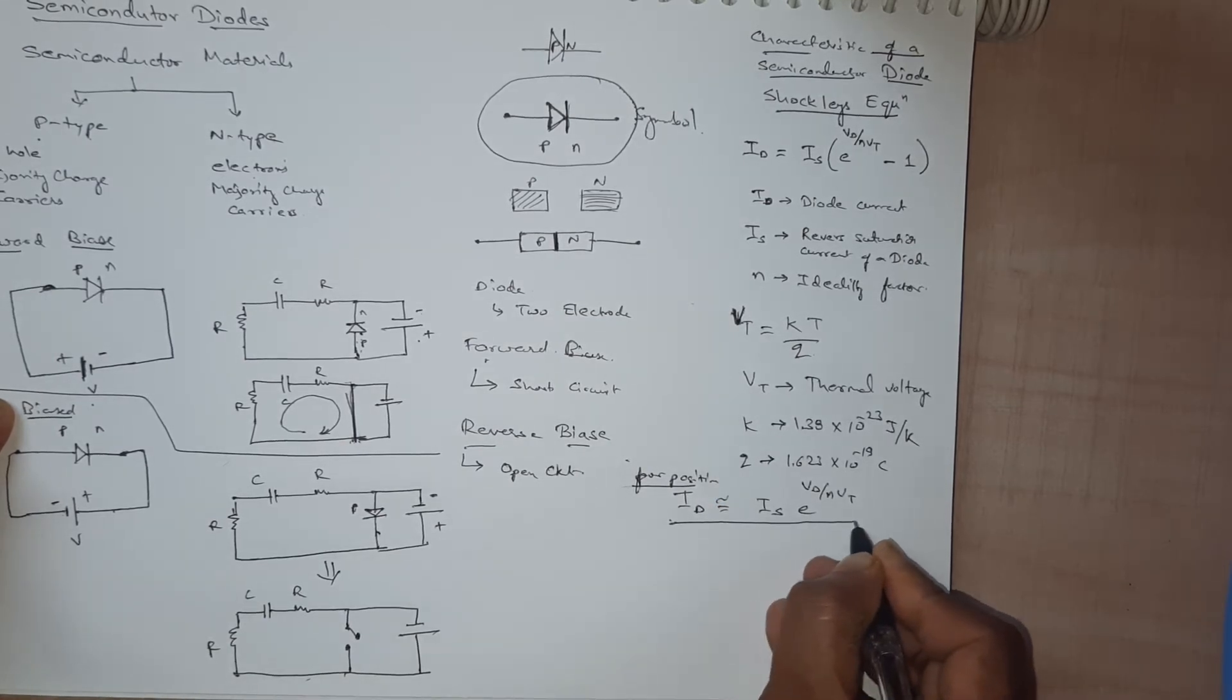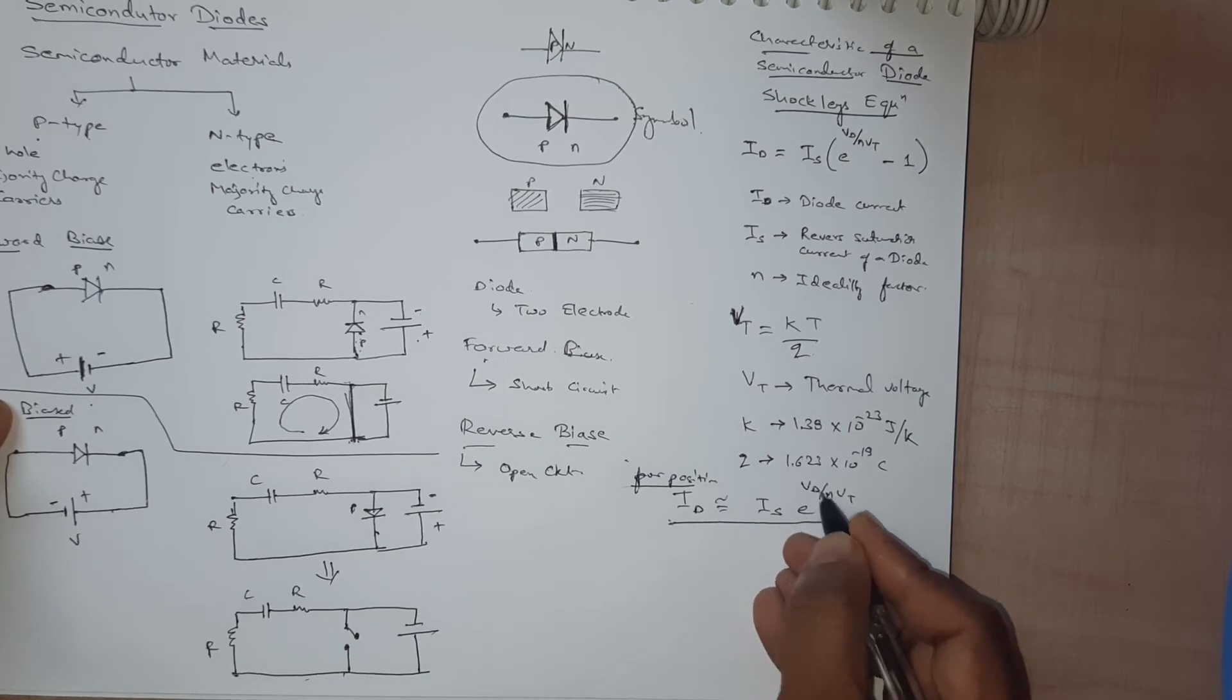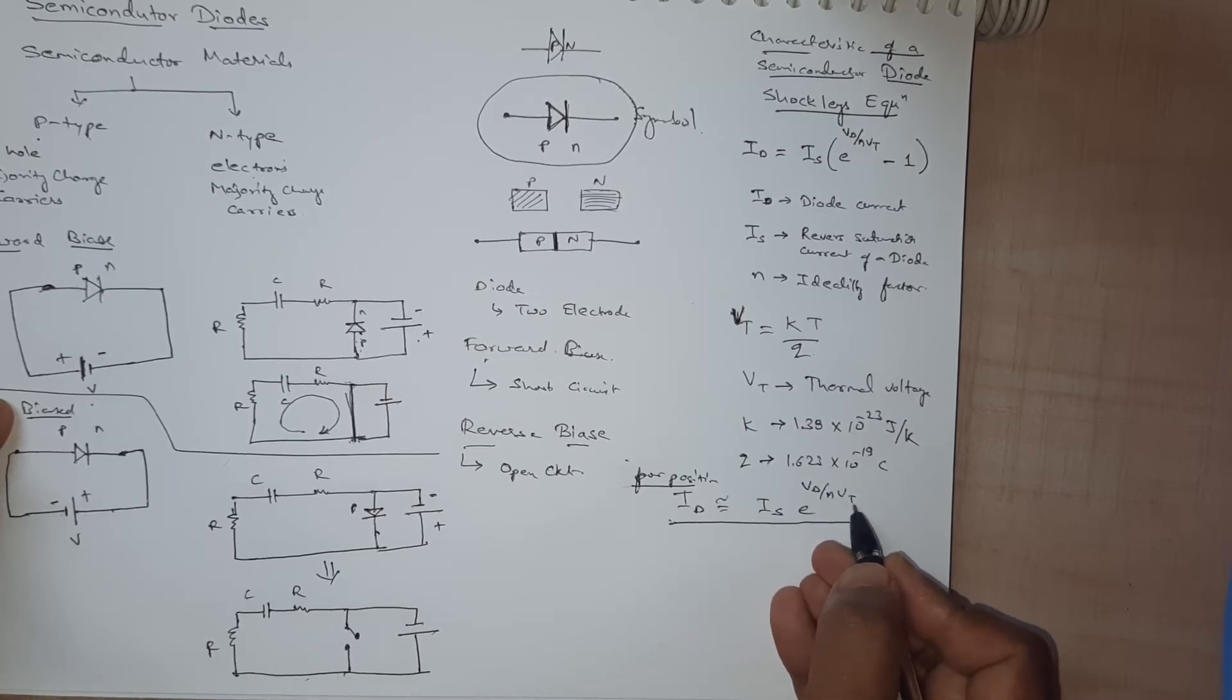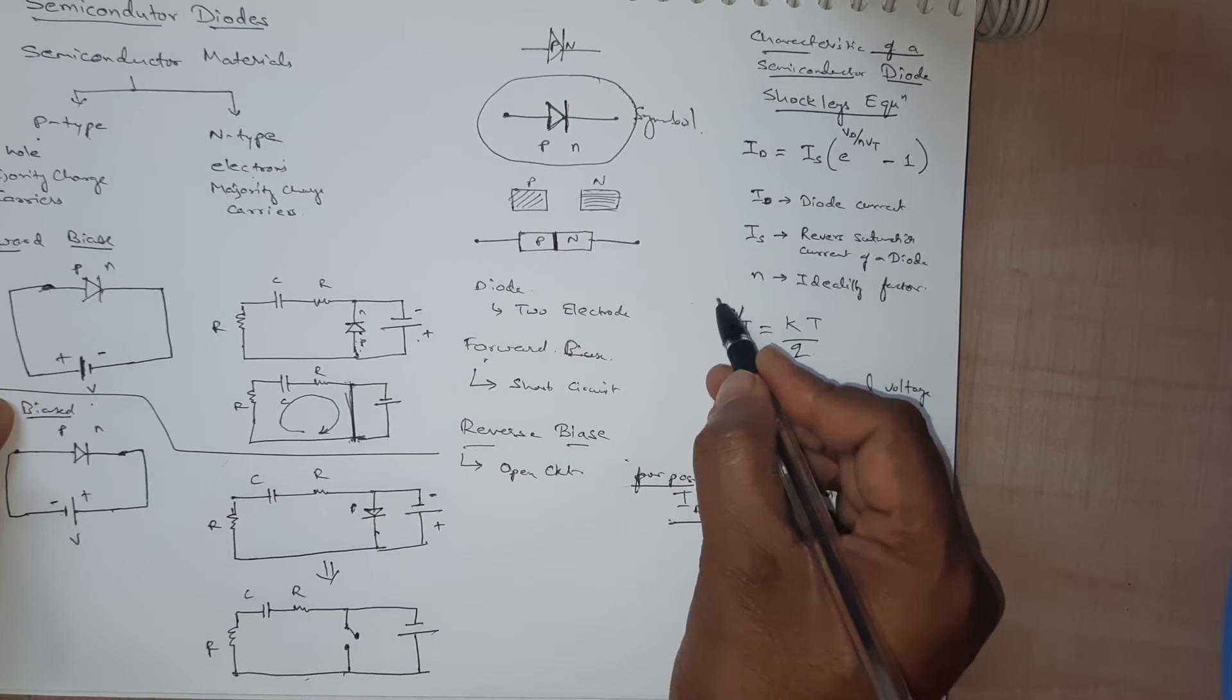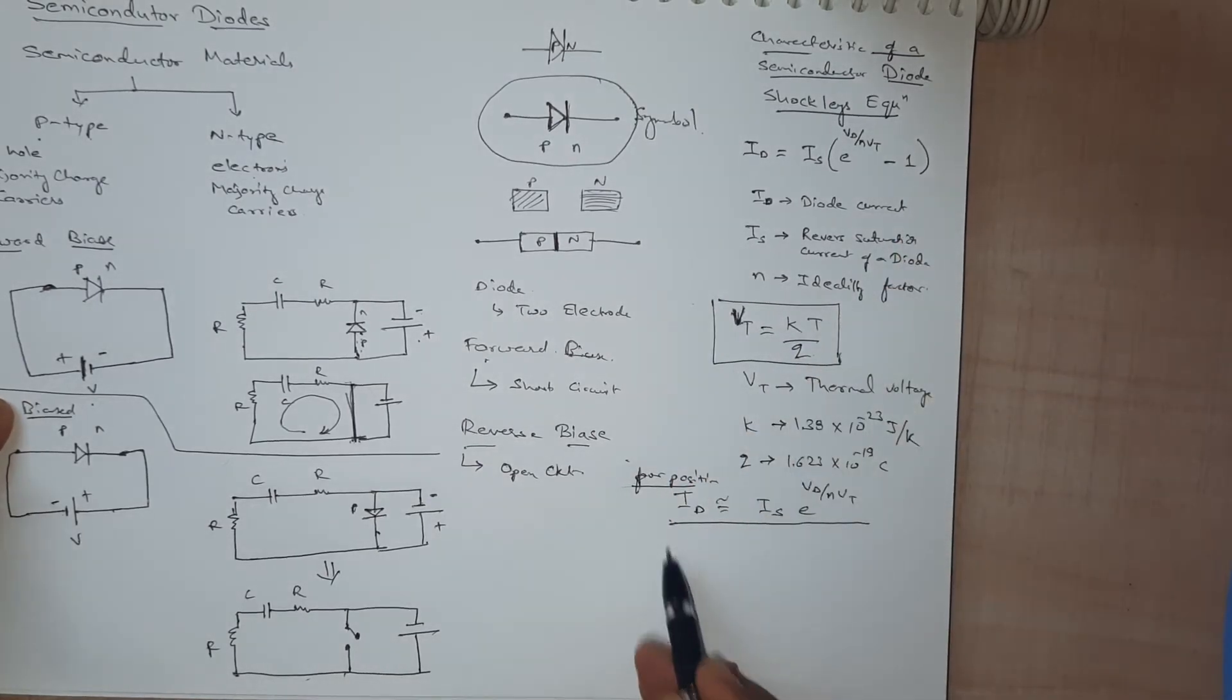Id is almost equal to this formula, is into e to power vd, the voltage applied, divided by the ideal factor and thermal voltage. The minus one will not be there for positive voltage.